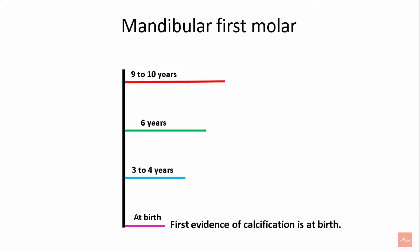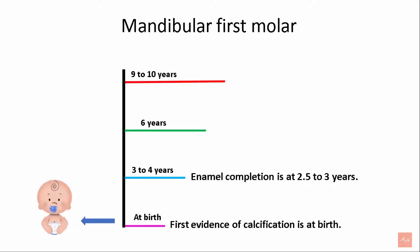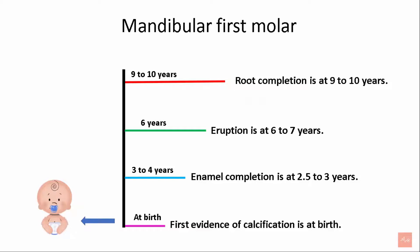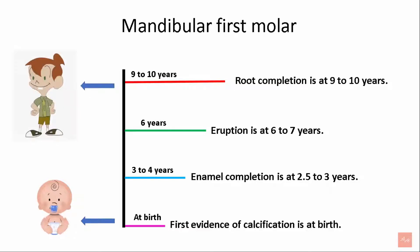The first evidence of calcification of the mandibular first molar is at birth. Enamel completion is at 2.5 to 3 years. Eruption is at 6 to 7 years, and root completion is at 9 to 10 years.